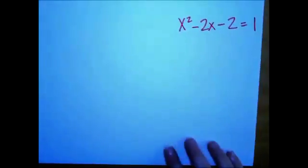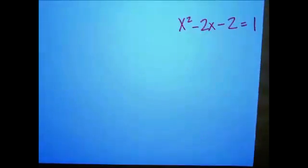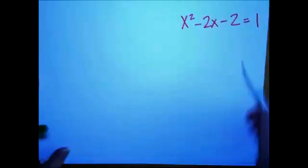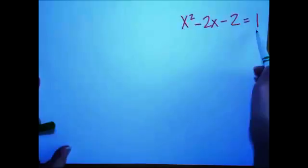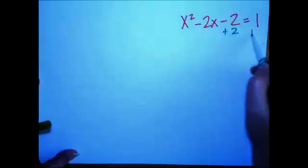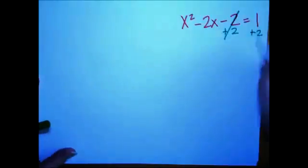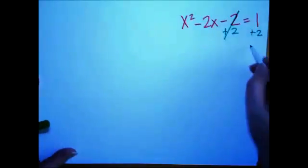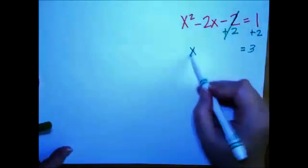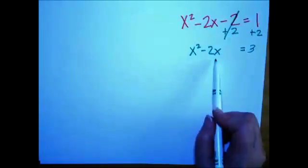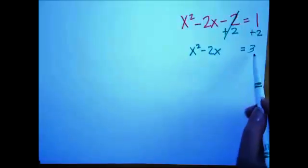And this time the equation is x squared minus 2x minus 2 equals 1. You may be noticing that we want the numbers to be isolated on one side. So let's make it so. And 1 plus 2 is 3. Okay. So this is what we've got now. x squared minus 2x on one side equal to 3.